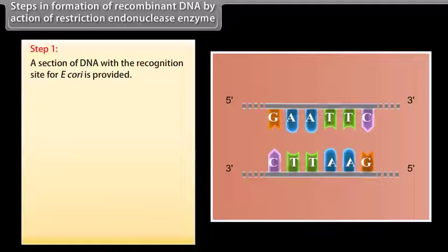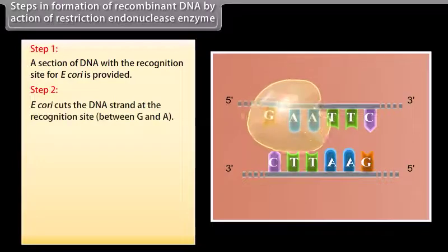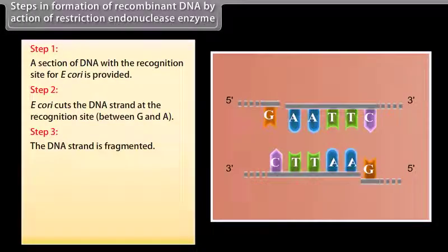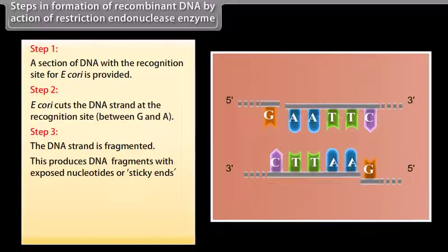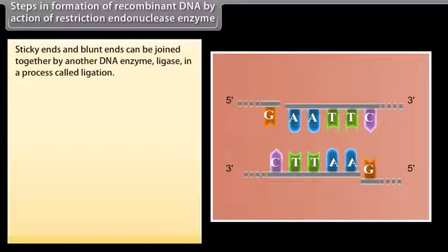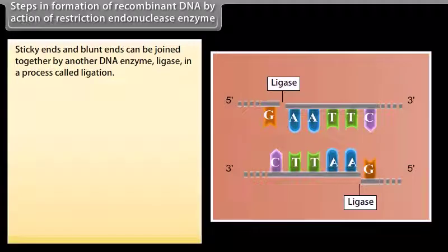Step 1: a section of DNA with a recognition site for EcoRI is provided. Step 2: EcoRI cuts the DNA strand at the recognition site between G and A. Step 3: the DNA strand is fragmented, producing DNA fragments with exposed nucleotides called sticky ends. Other restriction enzymes, for example HindII, make a straight cut and produce DNA fragments with no exposed nucleotides called blunt ends. Sticky ends and blunt ends can be joined together by another DNA enzyme, ligase, in a process called ligation.